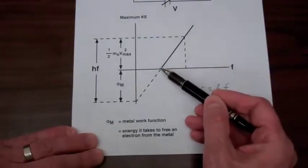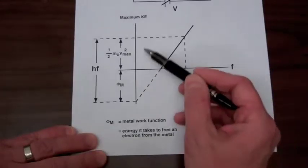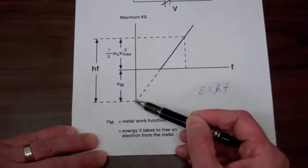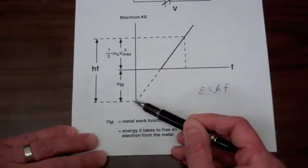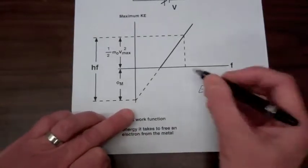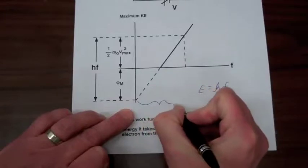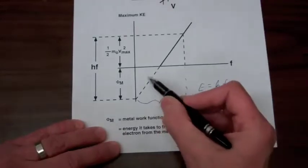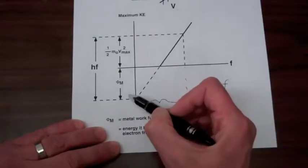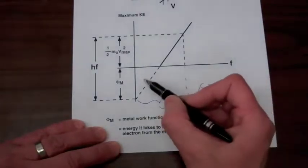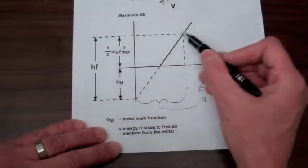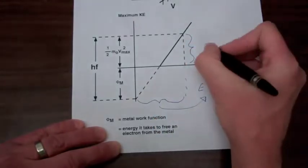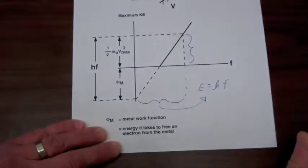Looking at the results of the photoelectric effect for the maximum kinetic energy as a function of frequency, let's extend the line down to where it intersects the energy axis. For a frequency of f, the energy in a quantum of a beam of light is h times f. So until the size of the quantum was equal to the metal work function, an electron could not be emitted. And when the size of the quantum was greater than the metal work function, the additional energy in the quantum appeared as the kinetic energy of the emitted electron.